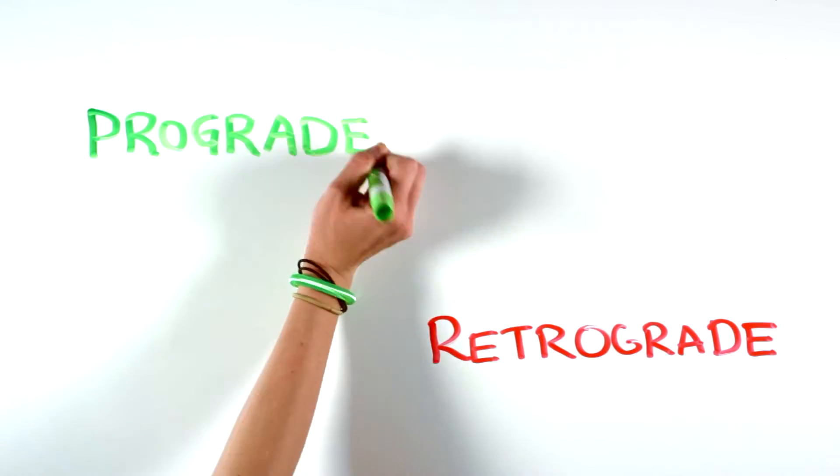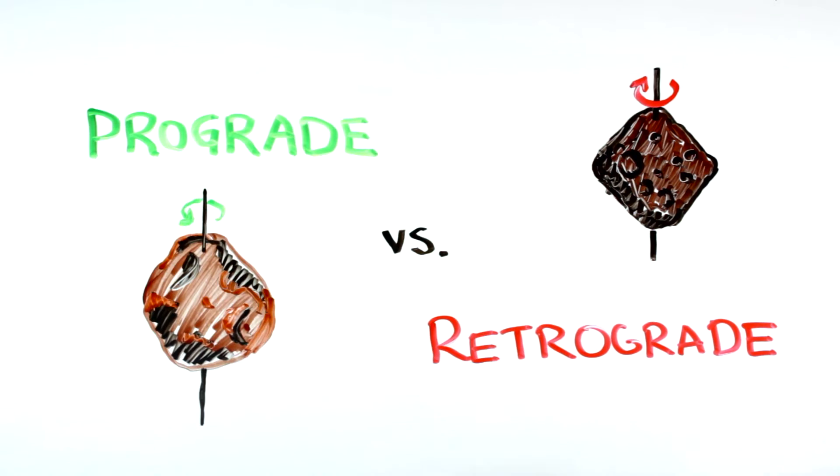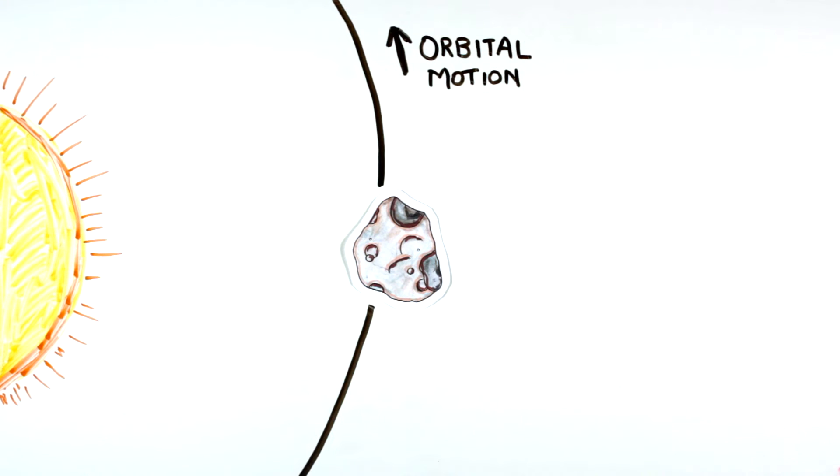Astronomers use the terms prograde and retrograde to describe the way that solar system objects rotate or spin while they orbit. Objects such as asteroids have two primary types of motion: orbital motion around the sun and rotational motion, or spin, around an axis or pole.